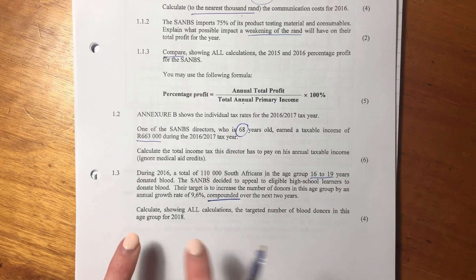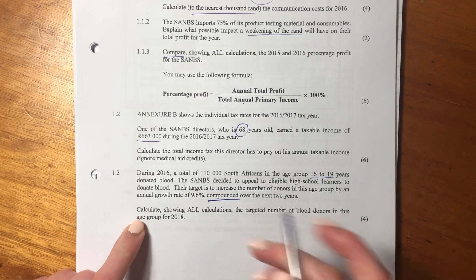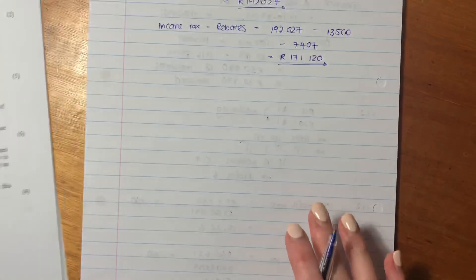So let's now see what they're asking us. They say, calculate, showing all calculations, the target number of blood donors in the age group for 2018. Okay, so let's write this down.